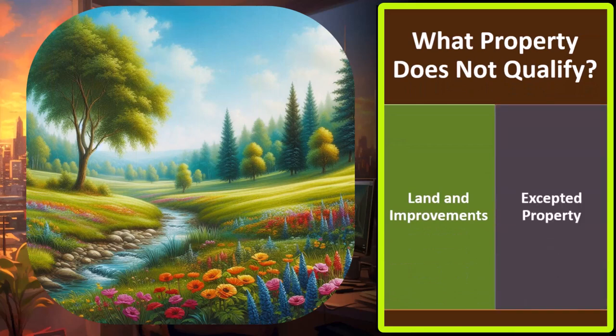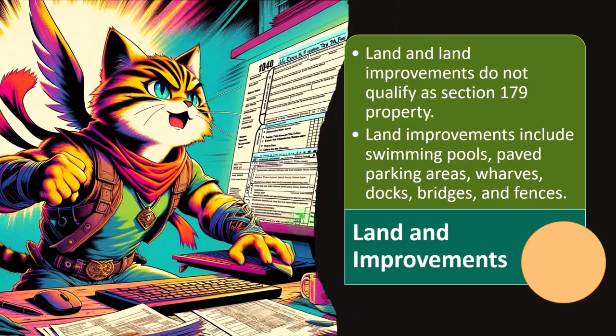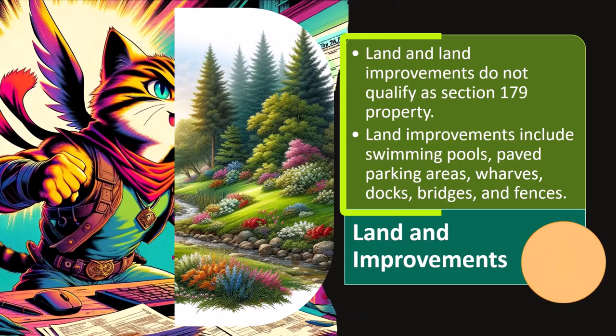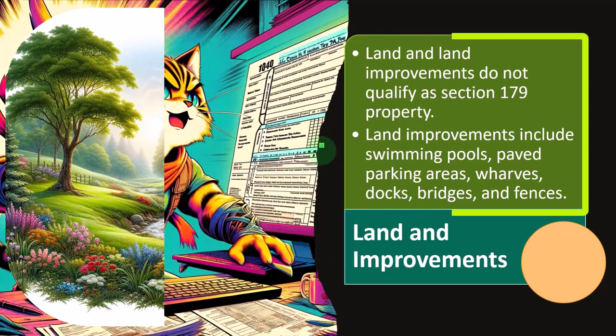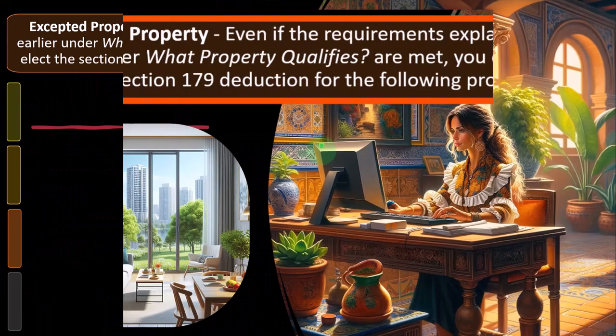What property does not qualify? Land and improvements, and accepted property. Land and land improvements do not qualify as Section 179 property. Land improvements include swimming pools, paved parking areas, wharves, docks, bridges, and fences.